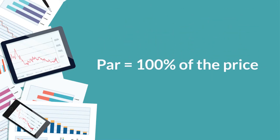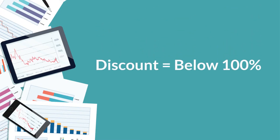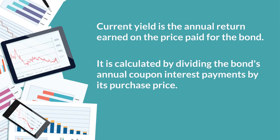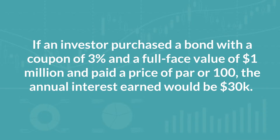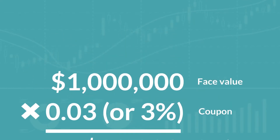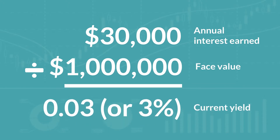All bond prices work off of a price called par, which is essentially 100% of the price. A bond priced over 100, such as 102, is said to have a premium price, and a bond priced below 100 is said to be priced at a discount. For the investor, the current yield is the annual return earned on the price paid for the bond. It is calculated by dividing the bond's annual coupon interest payments by its purchase price. For example, if an investor purchased a bond with a coupon of 3% and a full face value of $1 million and paid a price of par, or 100, the annual interest earned would be $30,000. We get this by multiplying the face value of $1 million times the 3% coupon. Current yield is the same as the coupon, 3%, as we can divide the annual interest earned by the face value of the bond. That gives us a 3% current yield.